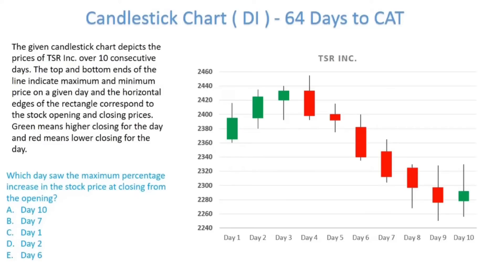Let's talk about the candlestick chart. You can see these rectangles are called candles and these lines are called sticks. The color green means the stock opened and closed at a higher value — it opened at a certain value and closed higher. Red means it opened at a certain price and closed lower. The stick represents the maxima and minima for that stock for that particular day. For example, this stock had a minima of approximately 2360 and a maxima of approximately 2415.